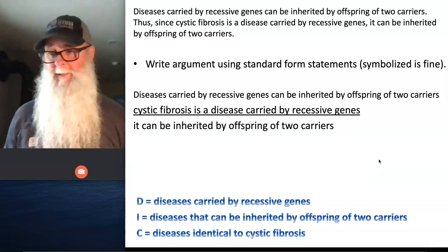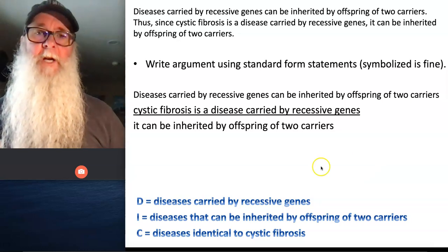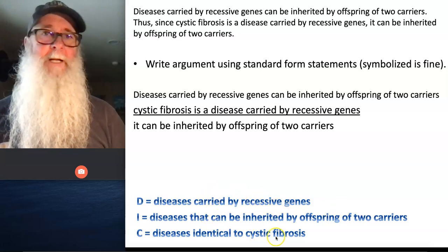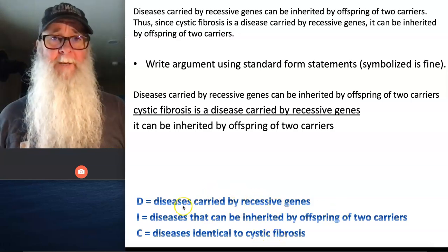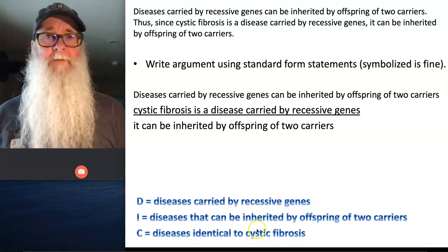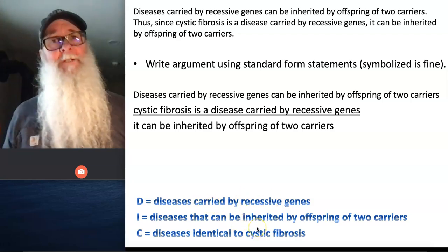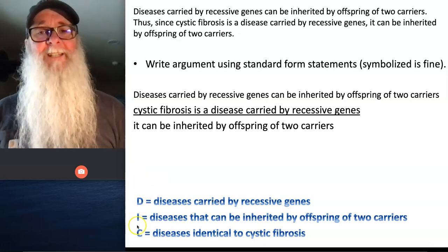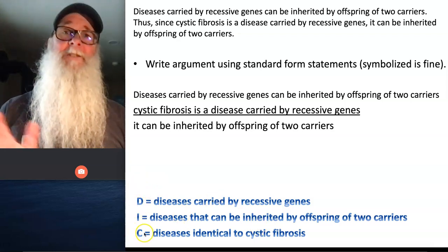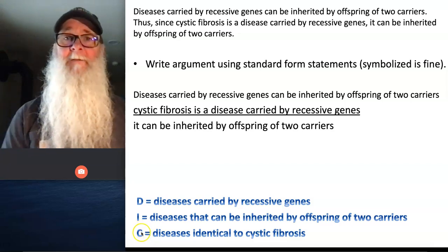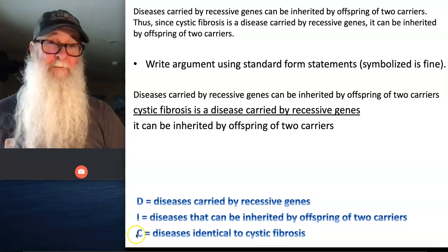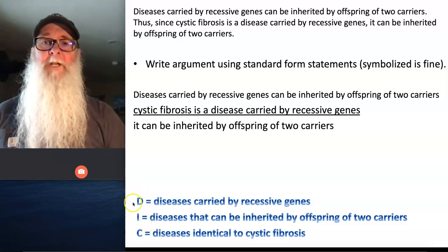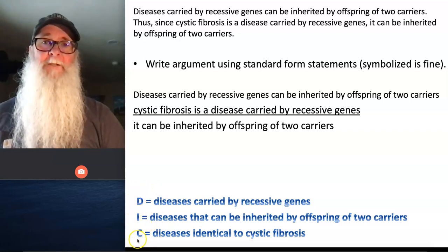What I mean by 'symbolized is fine' is this: we could write out the argument using the full wording of each of our three terms — that's perfectly fine. Or we can use standard form categorical statements and use the letters we've assigned to our terms to represent the subject and predicate terms. For efficiency sake, I'm going to suggest we just symbolize the argument using the letters assigned to our terms.